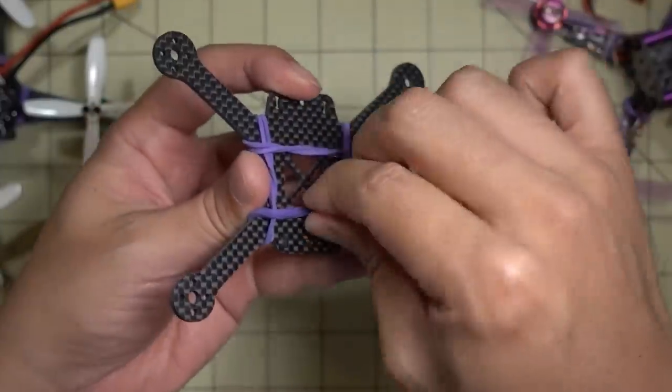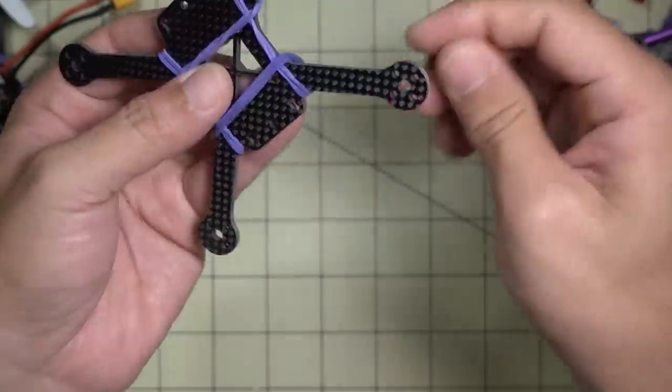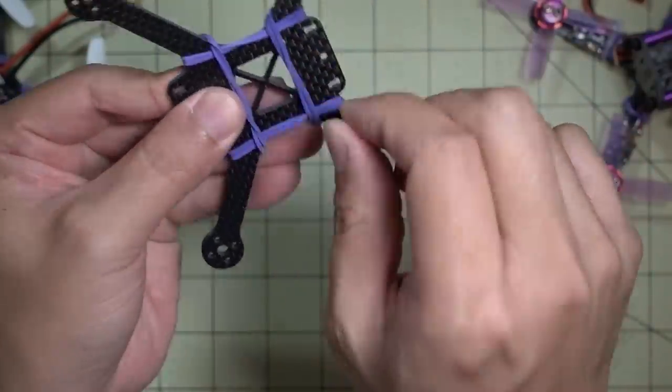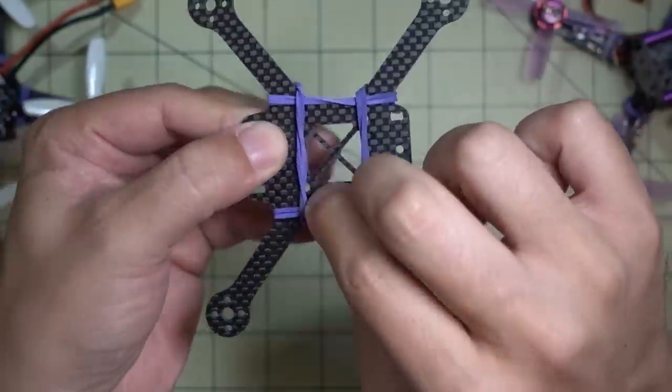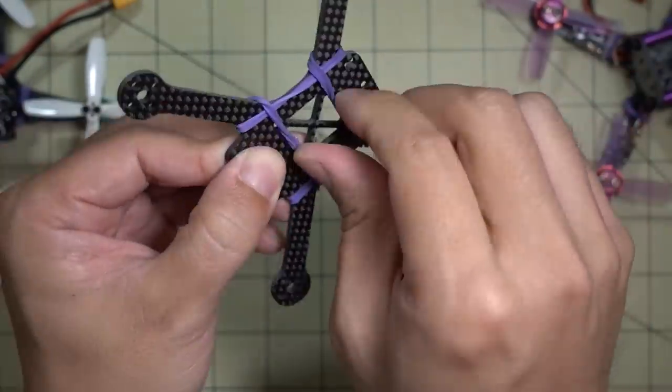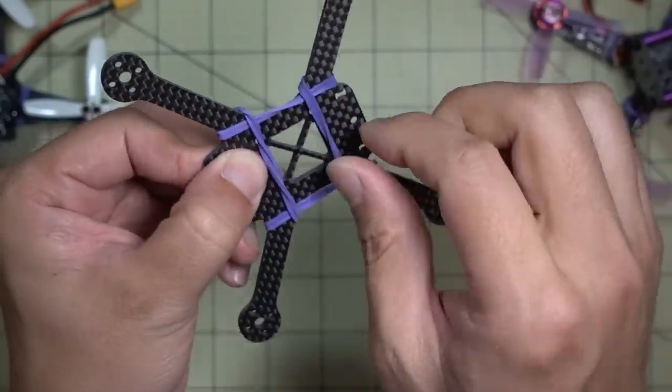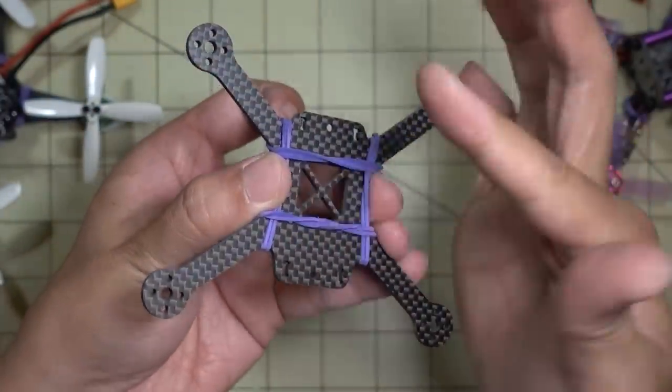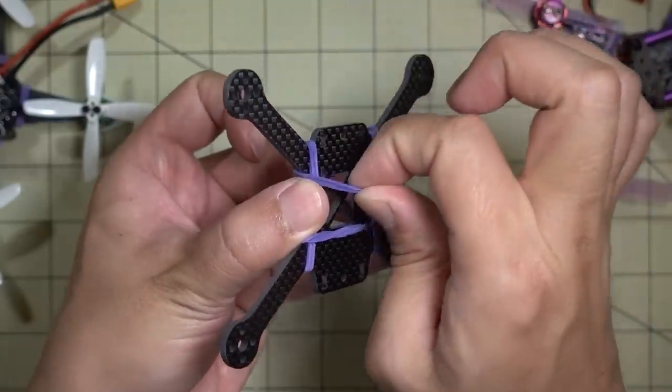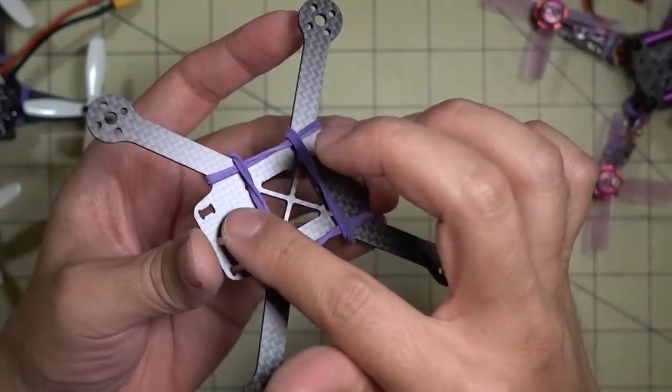And then you have one over here and one over here. Obviously you're going to want to move this around so that you have pretty good tension. You don't want one part of the rubber band to be too tight versus another. Then you should be able to have a pretty good grip on your battery. The rubber band does grip the battery if it has that sticker type or heat shrink type material.